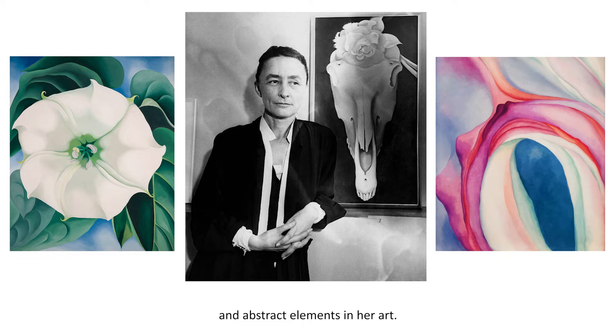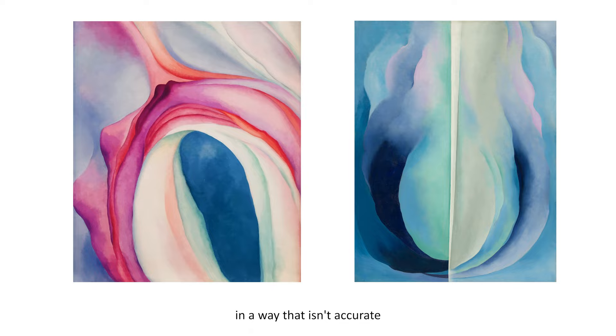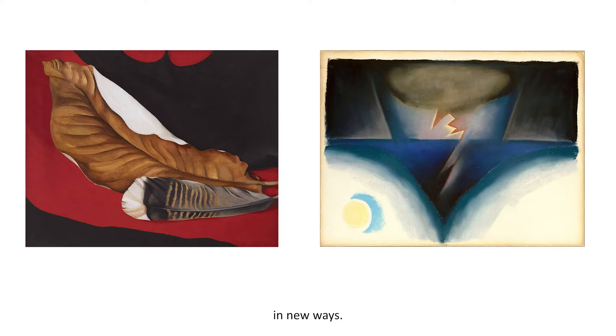Georgia O'Keeffe had a unique style. She liked to include both realistic and abstract elements in her art. Realistic means something is painted true to life. Abstract means that it is painted in a way that isn't accurate, but includes ideas and emotions that the artist wants to express. In her unique style, she used shapes and colors to make us notice nature in new ways.